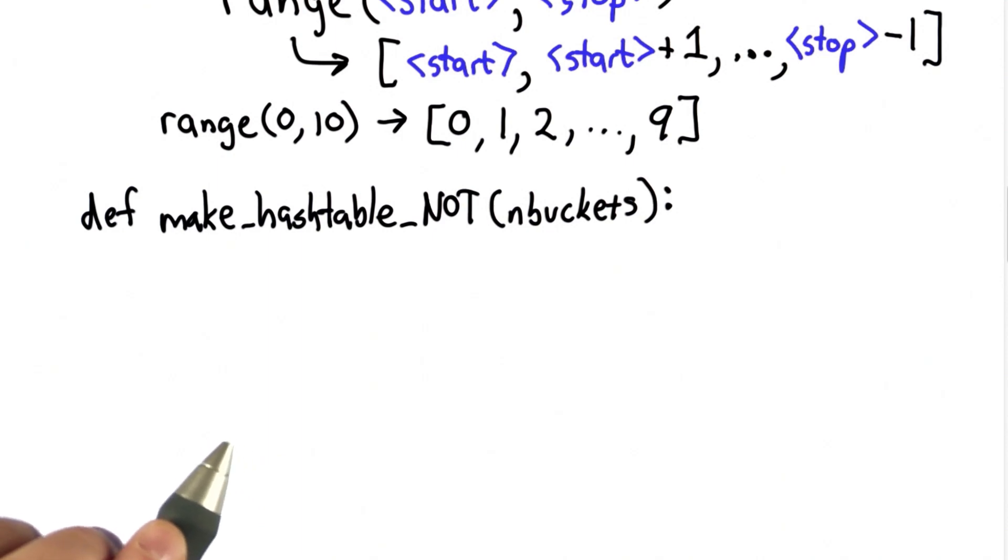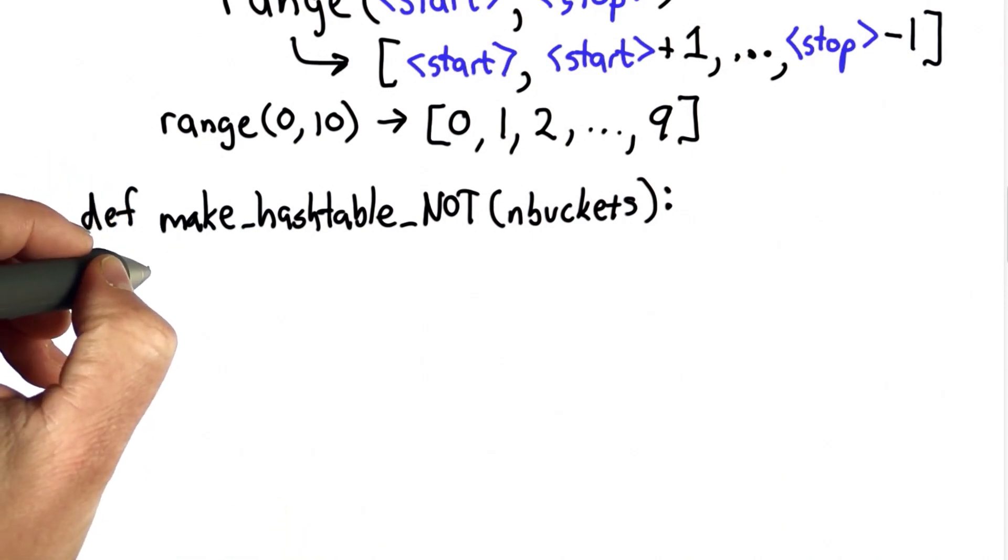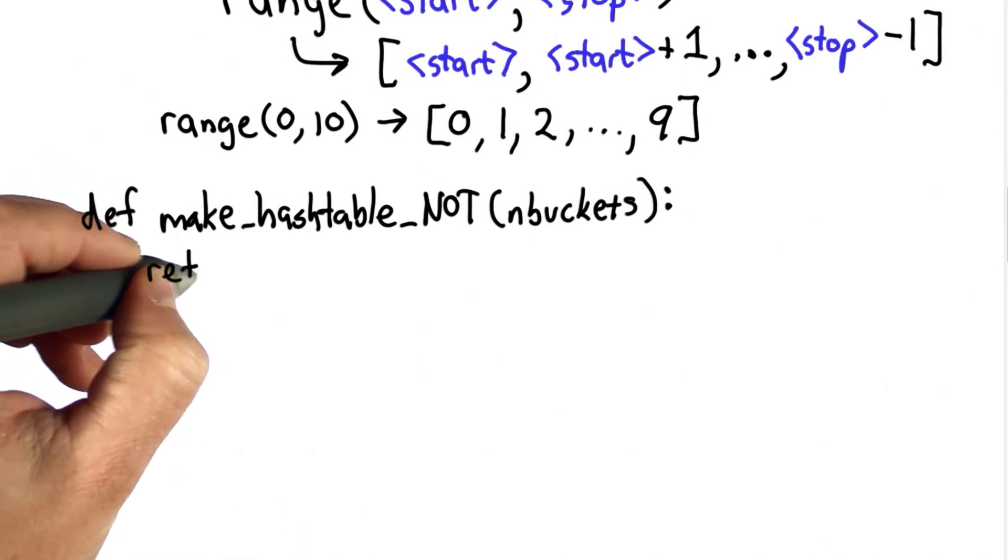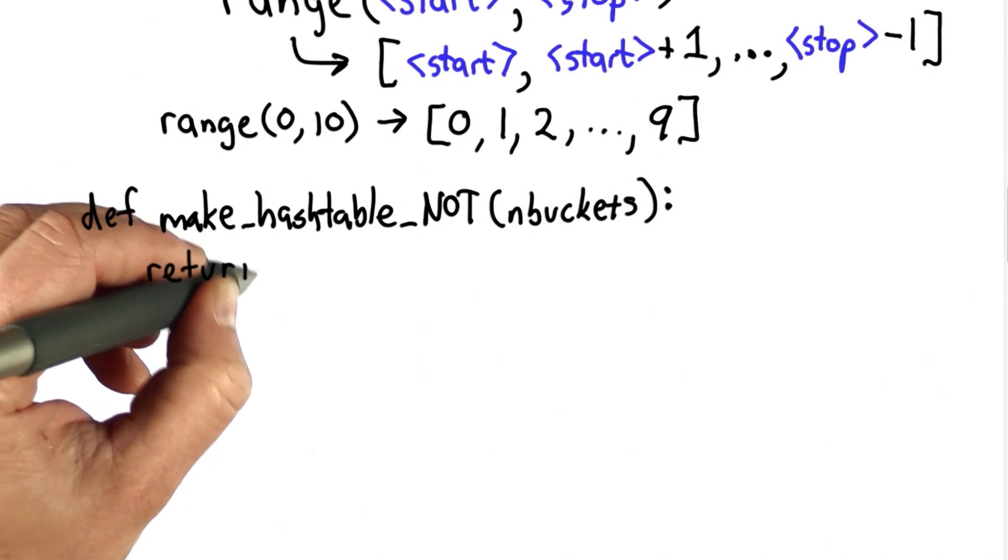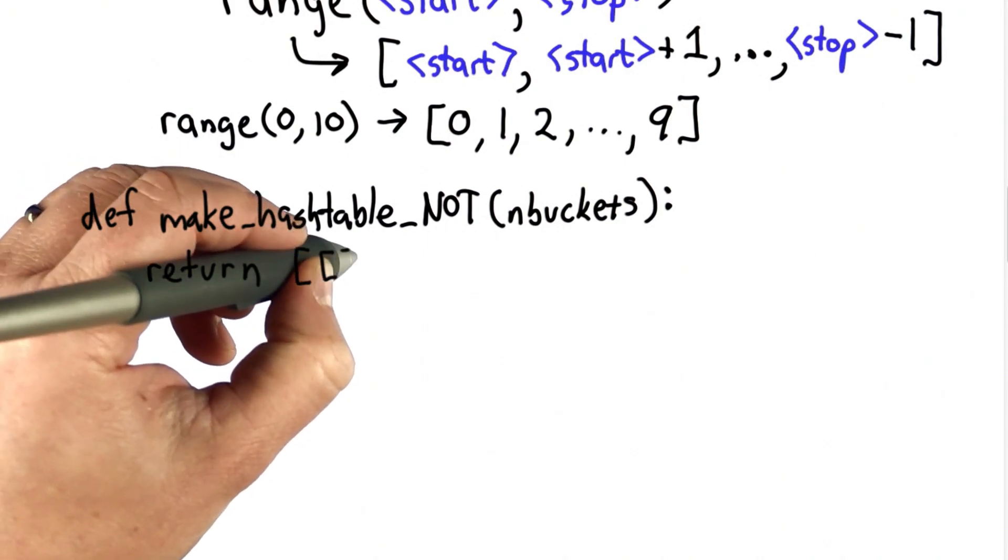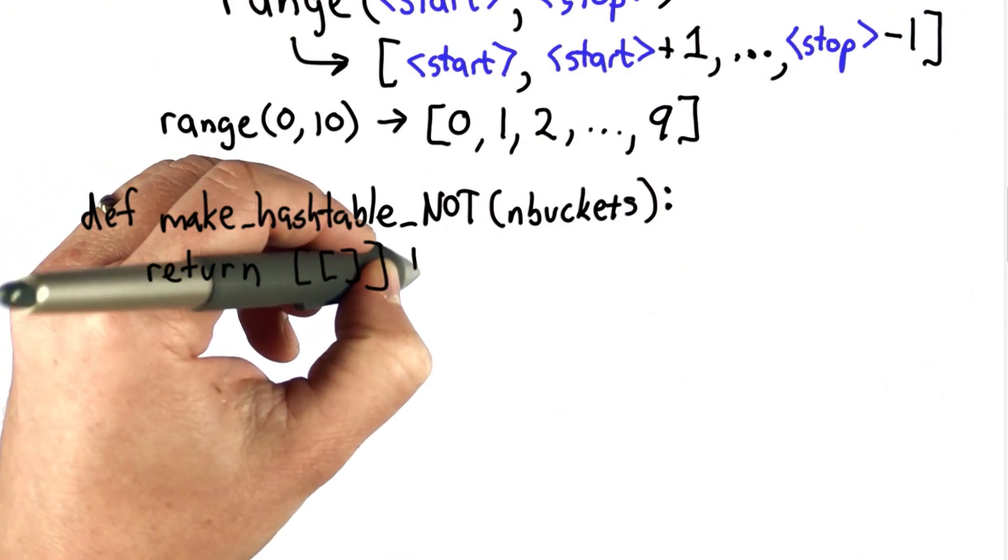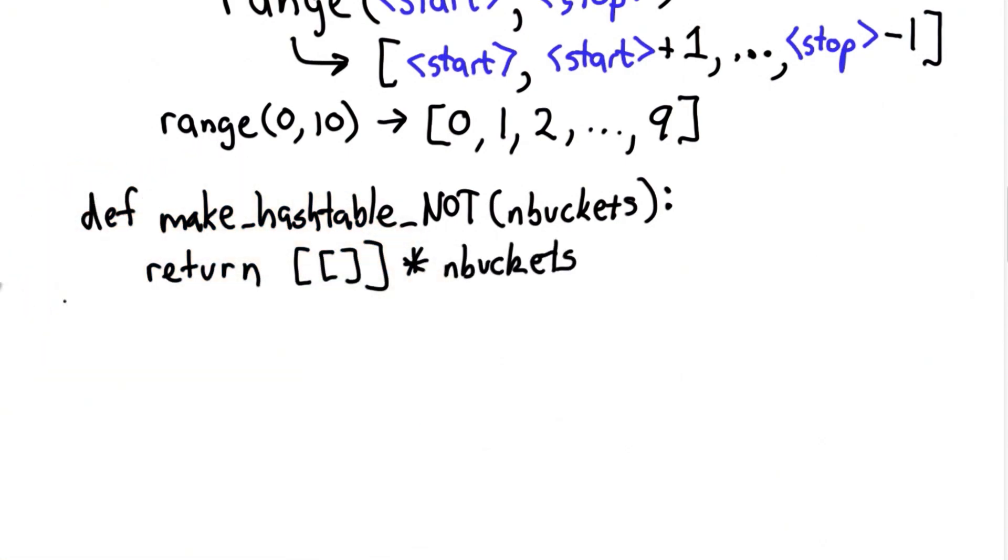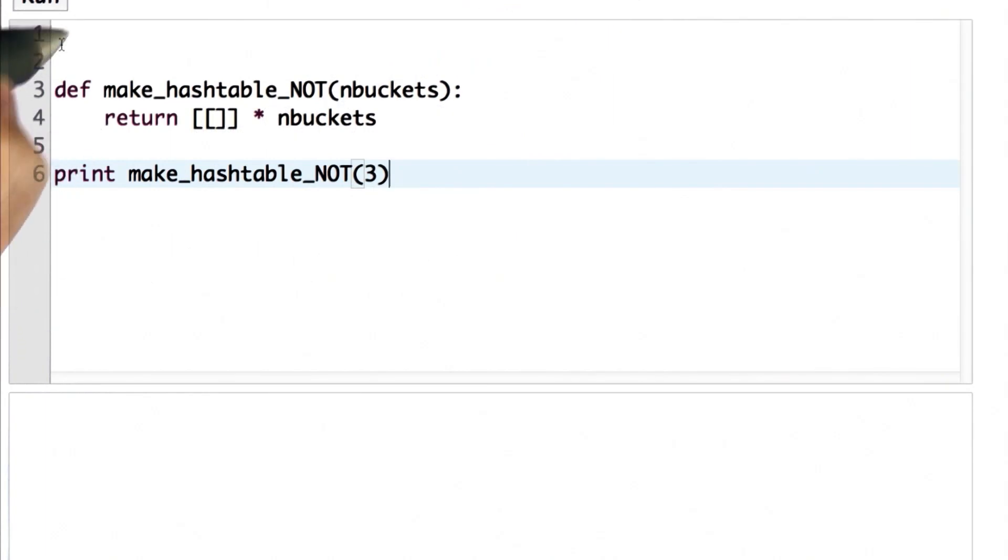If you were really clever, you might have thought of an even shorter way to define make_hashtable that unfortunately doesn't quite work. So the shorter way would be to guess that the times operator works on lists the same way it worked on strings. So we could do this by creating empty list times n buckets. This seems great. It's only one line. Really clear and easy to understand. And it looks like it almost works. So let's try that in the Python interpreter. And it looks like it worked. We got a hash table, a list with three empty buckets.